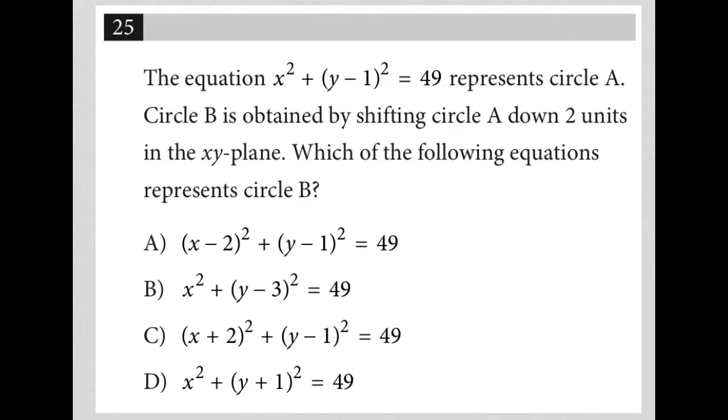This question says the equation x squared plus y minus 1 squared equals 49 represents a circle. Let's see where this is coming from. The generic equation for a circle is x minus h squared plus y minus k squared equals r squared, where h,k is the center.